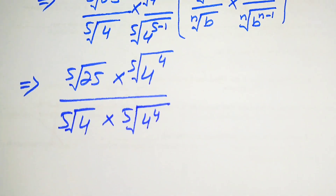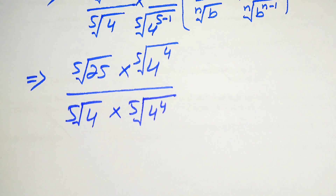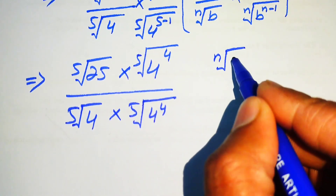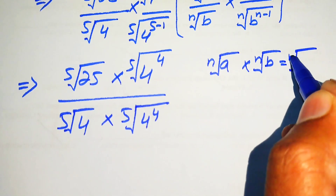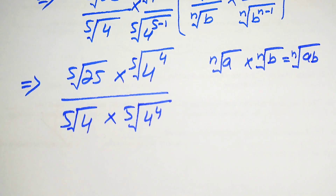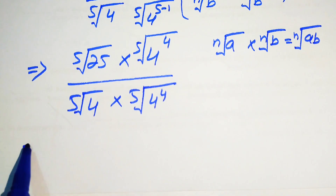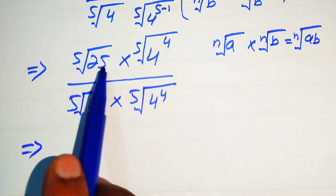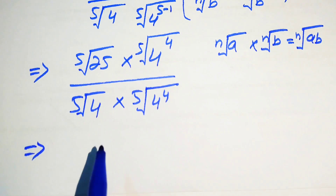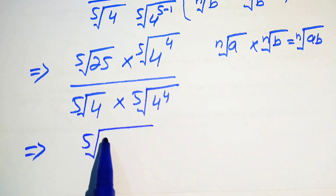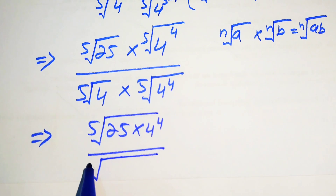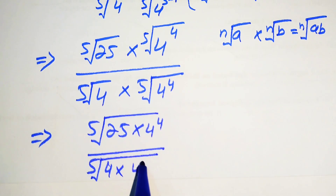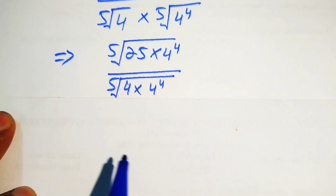We use another radical law: nth root of a multiplied by nth root of b equals nth root of (a times b). So if we have the same root with different bases, we combine their roots. We combine the 5th root of 25 and 5th root of 4 to the power of 4 into the 5th root of (25 times 4 to the power of 4), divided by the 5th root of (4 times 4 to the power of 4).